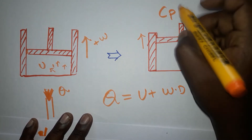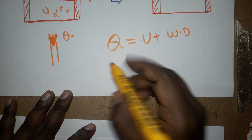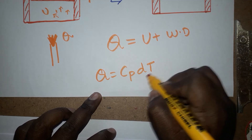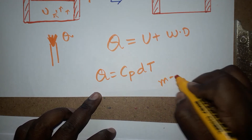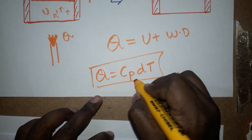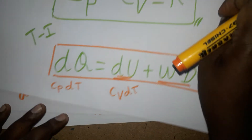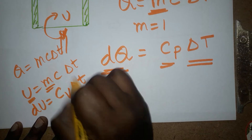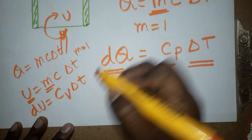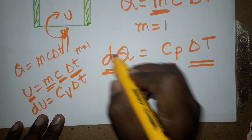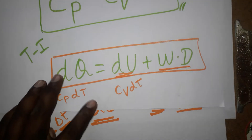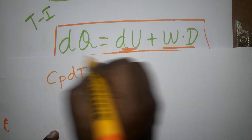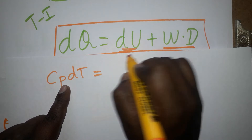To summarize: when pressure is constant and volume expands, the given heat energy is Q equals Cp·dT. When volume is constant, the total given energy converts to internal energy Cv·dT. Now applying thermodynamic first law: Cp·dT equals Cv·dT plus work done.